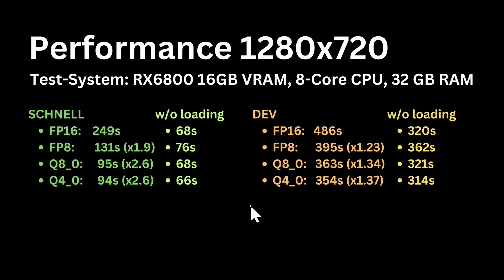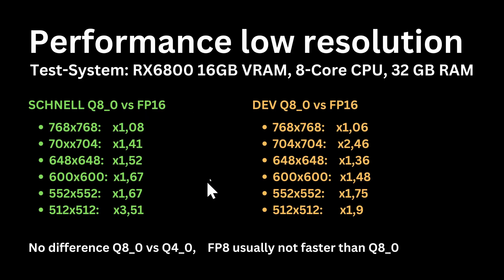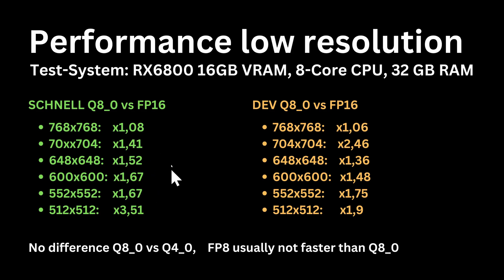I was surprised too and thought maybe I hadn't considered something. In fact, 16GB VRAM is not that much and the model simply didn't fit into the VRAM, at least not for this resolution. So I made some more tests with a lower resolution, and surprise — the new Q models are very fast at lower resolutions. At least that's true for my system. If you have a different GPU or less VRAM, you might have different results, and as I've read, for NVIDIA GPUs you might have much better performance.